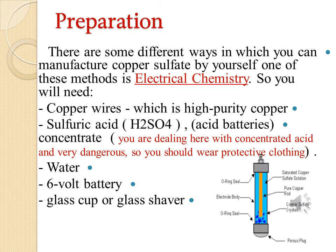Preparation method: There are different ways to manufacture copper sulfate. This method relies on a little electrochemistry to get the job done. You will need copper wire with high purity, sulfuric acid (H2SO4), a 6-volt battery, and a glass cup. Since you are dealing with a highly dangerous acid, you should wear protective clothing.